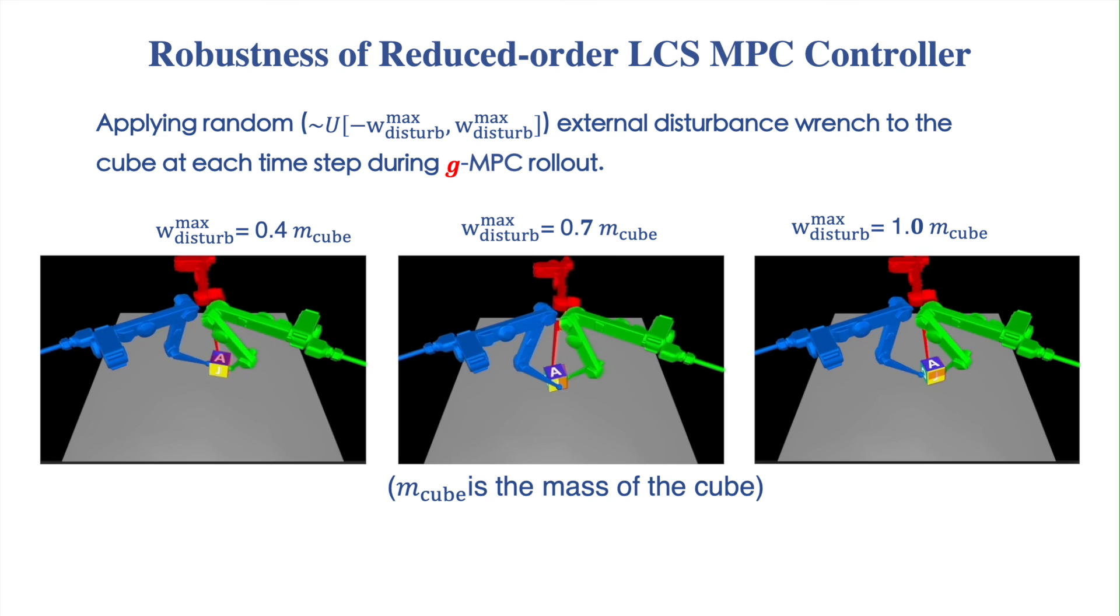Here we also show that the learned reduced-order MPC controller is robust against external disturbances with different magnitudes applied to the cube during the MPC rollouts.